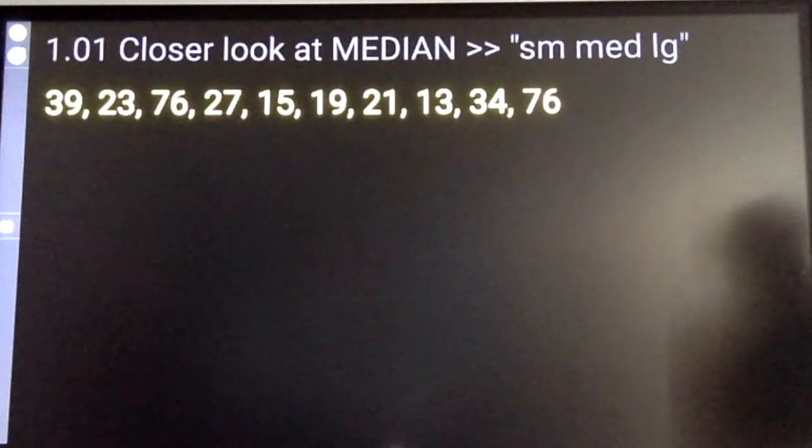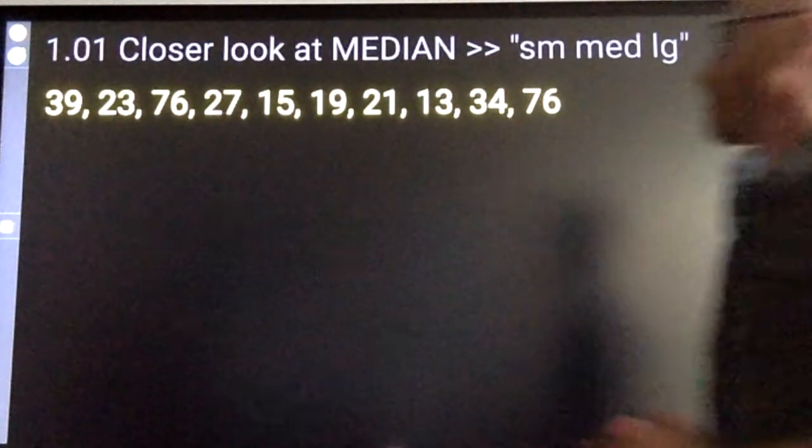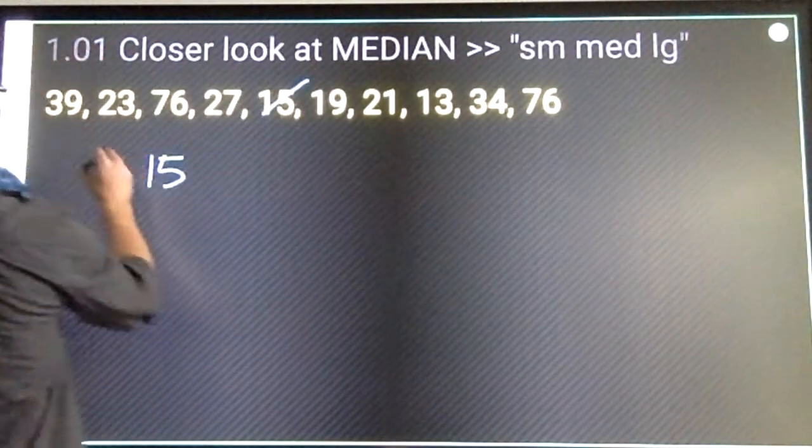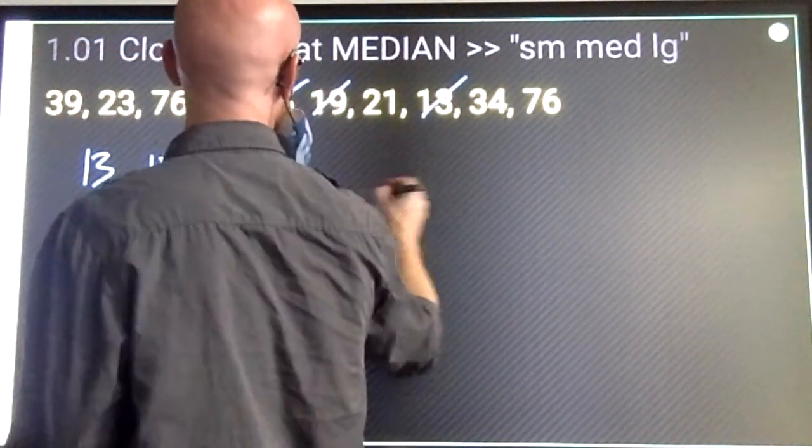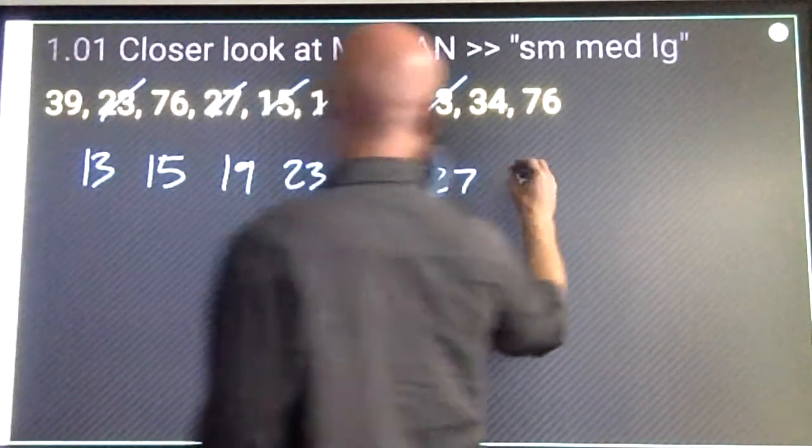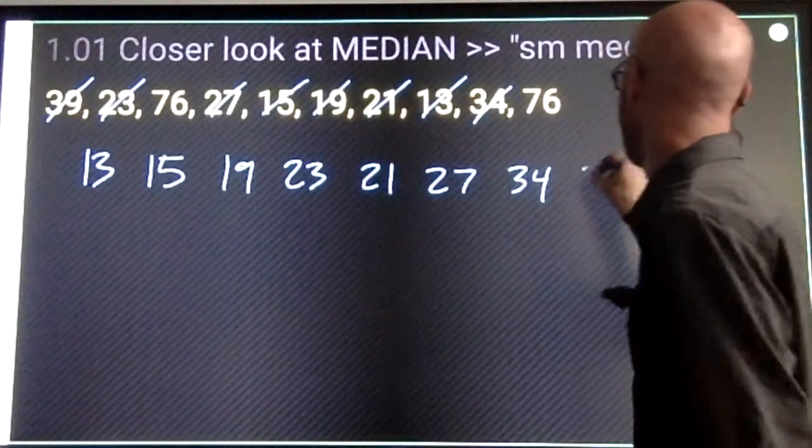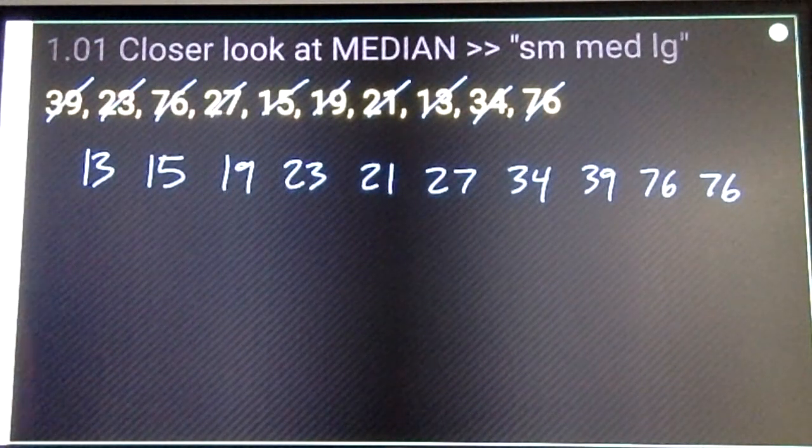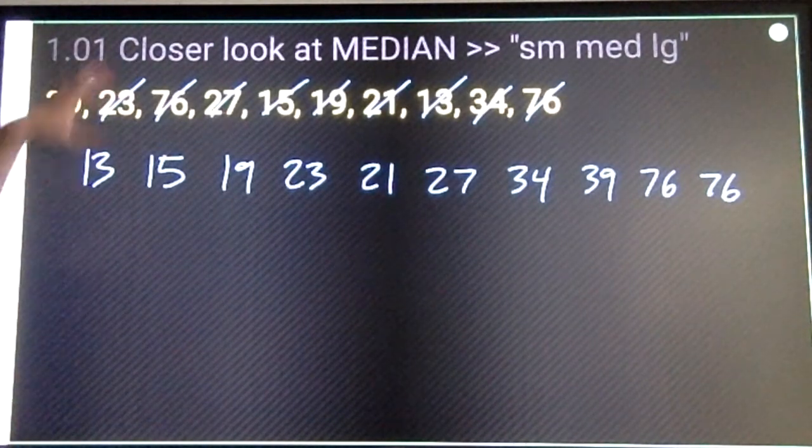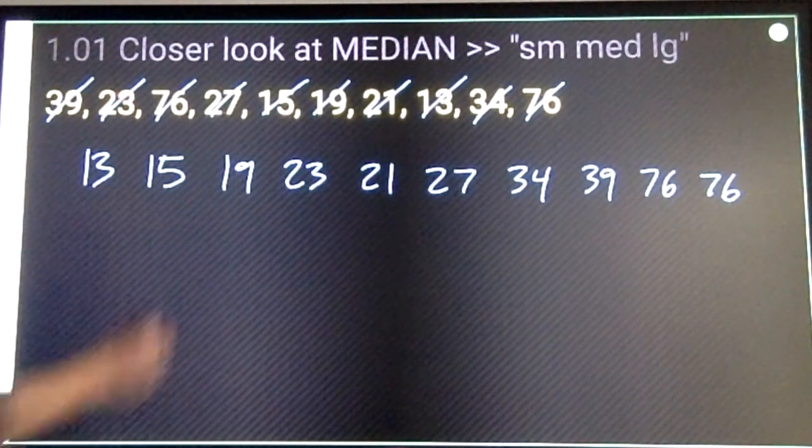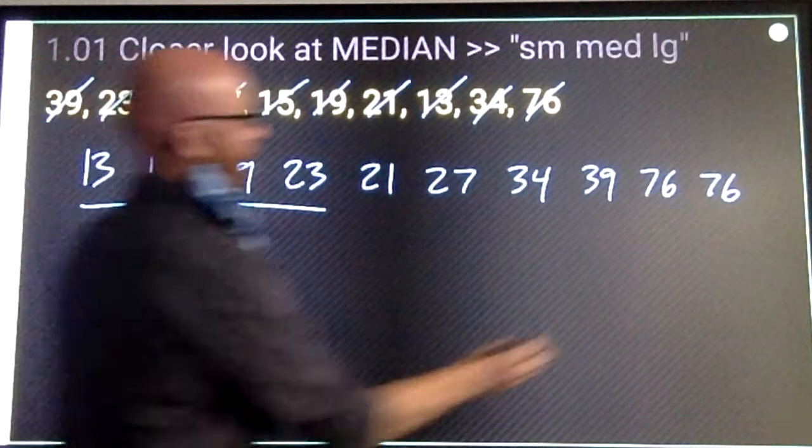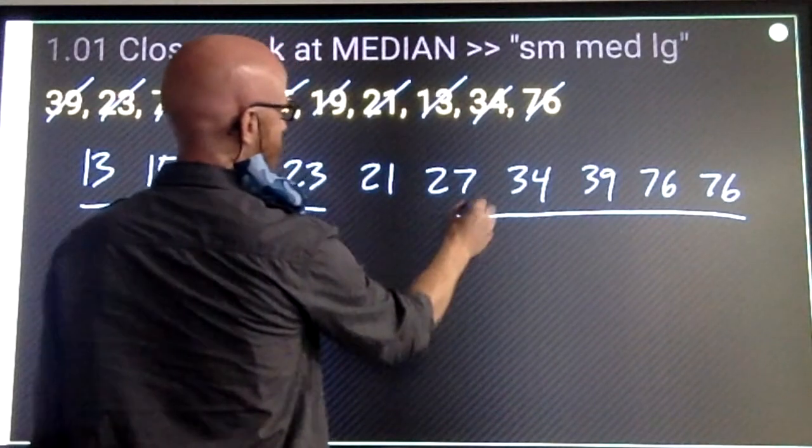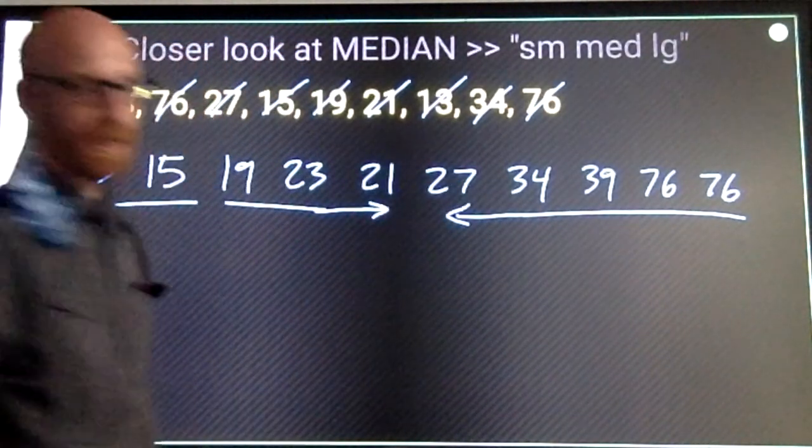Closer look at median. Sometimes when you put your numbers in order and count towards the center. One, two, three, four. One, two, three, four. You end up with two numbers in the middle.